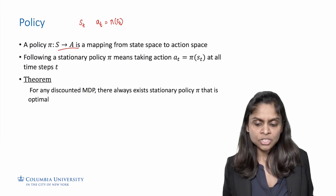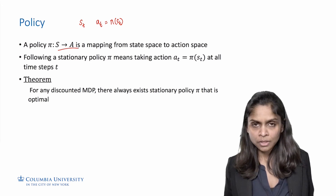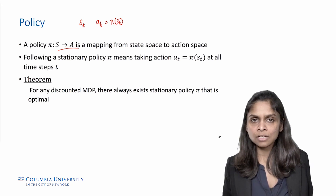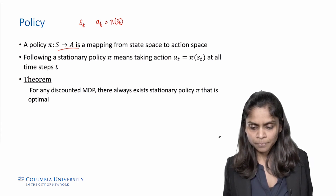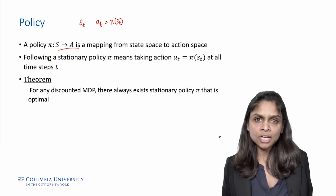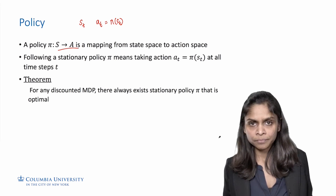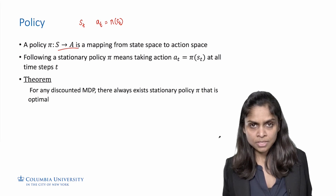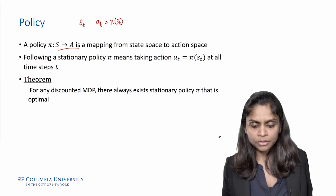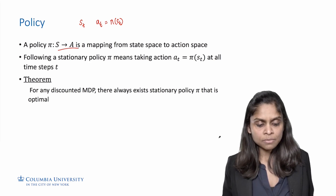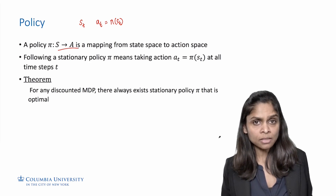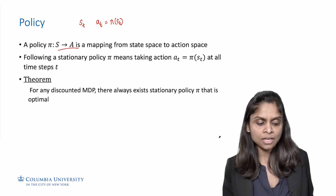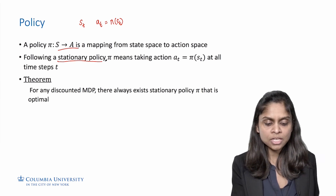In general, an agent can change policies over time. Maybe it initially decides that it will always walk in the standing state, but later changes to always running. In this case, the agent is using different policies at different time steps. On the other hand, if the agent picks actions at all time steps using a single policy pi, then we say the agent is using a stationary policy.